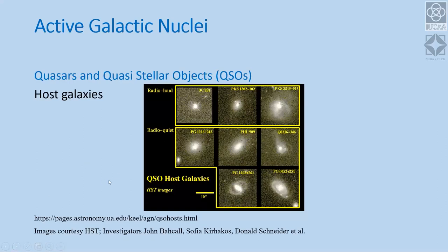The quasars could be hosted by ellipticals, spirals, and interacting systems. Just as with galaxies, if you look at a volume of space, only about 10% would be extremely radio-loud — most are radio-quiet. This radio-loud/radio-quiet dichotomy is still being studied, and why only about 10% of ellipticals are radio-loud is a question not yet answered satisfactorily.